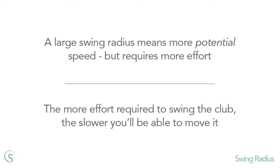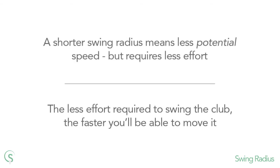And again, the same applies to golf. The larger your swing radius, the more effort it takes to swing the club head at speed. The shorter the swing radius, the easier it is to swing and so the quicker you can move the club head. So how does Bryson get away with it? By hitting the gym. You have to be incredibly strong to move a large swing radius quickly.